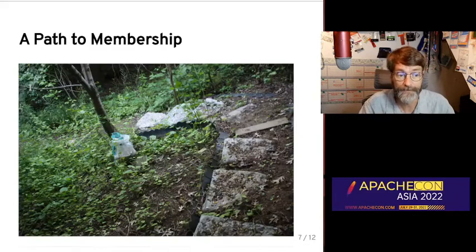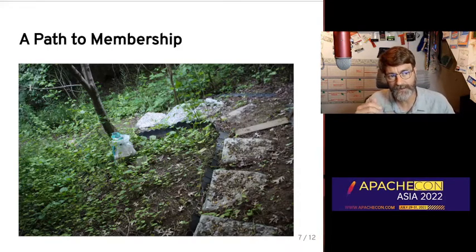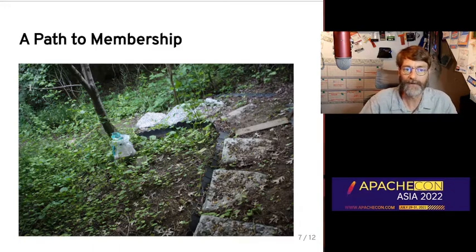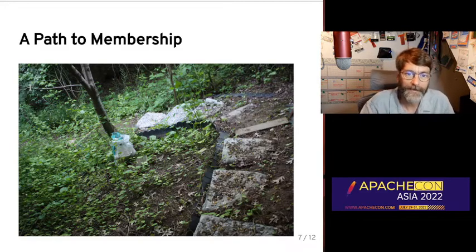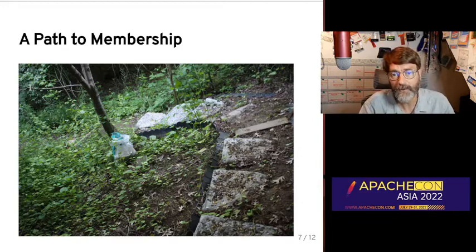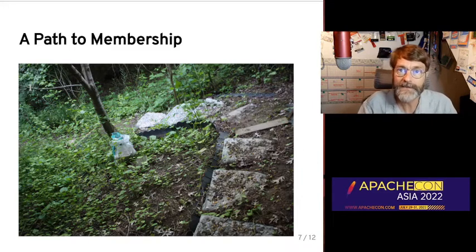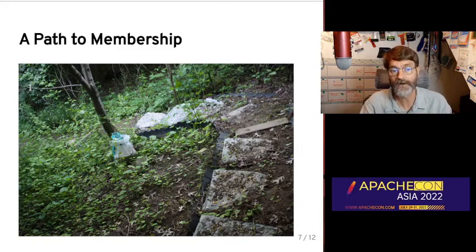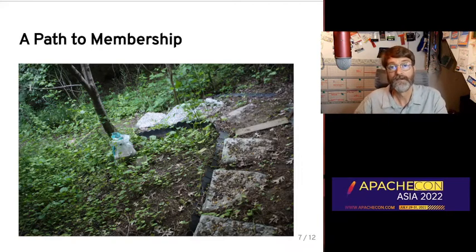Which leads me to my second point: there must be a path to full membership. In this picture, you'll see something that you might see if you visit my home — the path behind my house that leads down to the stream, one of the places where we like to go and spend our free time. In any community, beginners need to know that there is a path to greater involvement. The path must be discoverable, not hidden, or most people will simply believe that they are forever on the outside. Clearly telling people how to become more involved and encouraging them to walk down that path is an essential part of gaining new community members.